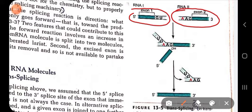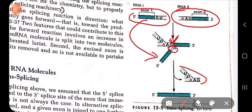The 2'-OH group of exon one carries out the nucleophilic attack — the transesterification reaction — at the three prime splice site of another mRNA. This leads to removal of the introns and joining of the exons to form a mature mRNA product.